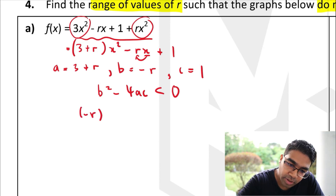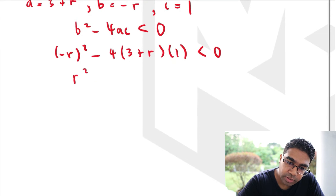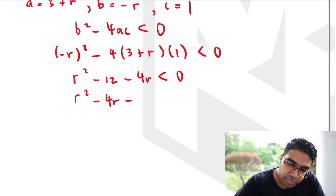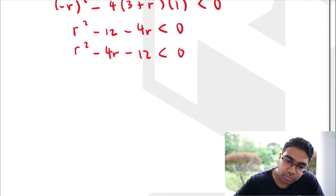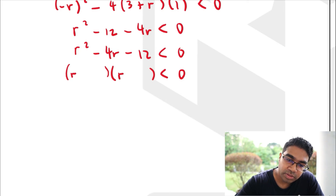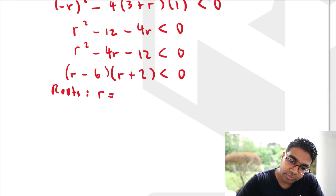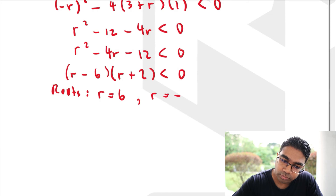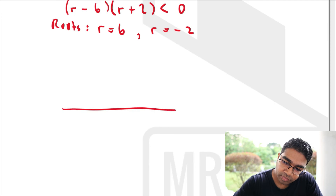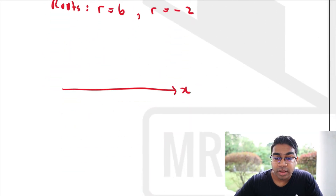We apply b² − 4ac < 0: (−r)² − 4(3 + r)(1) < 0, which gives r² − 12 − 4r < 0. Rearranging to general form: r² − 4r − 12 < 0. Factorizing: (r − 6)(r + 2) < 0. The roots are r = 6 and r = −2. Since a = 1 is positive, we have a smile with roots at −2 and 6.